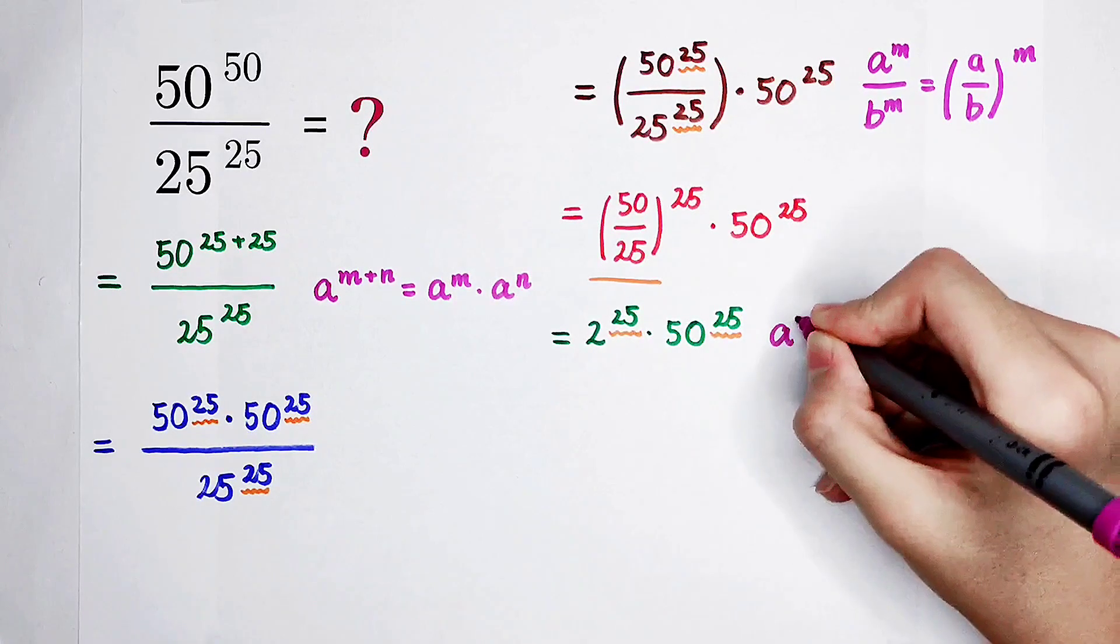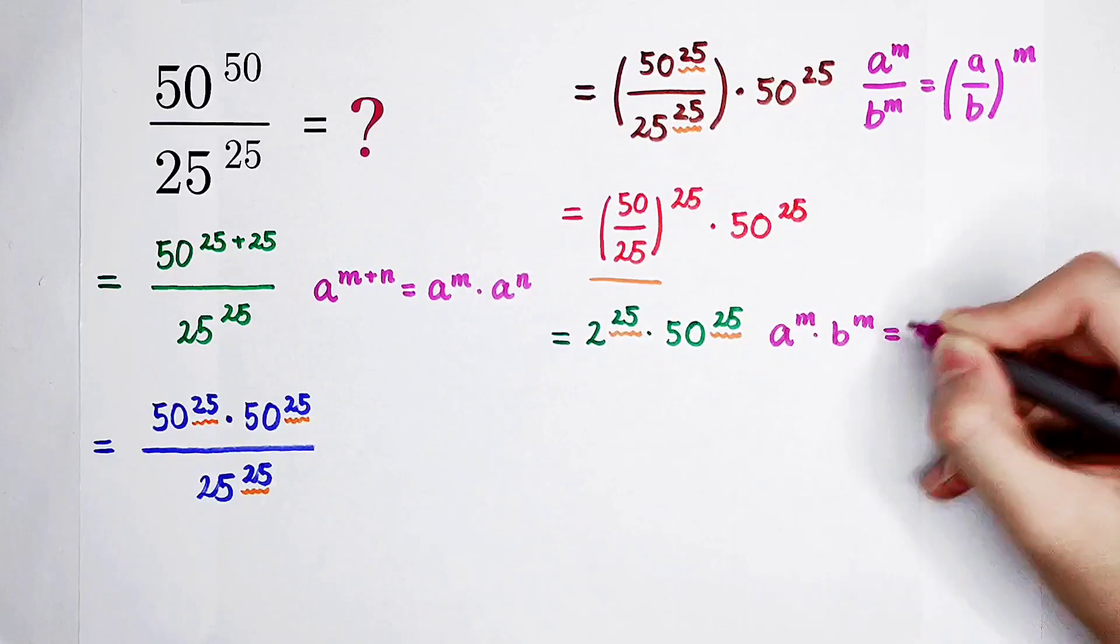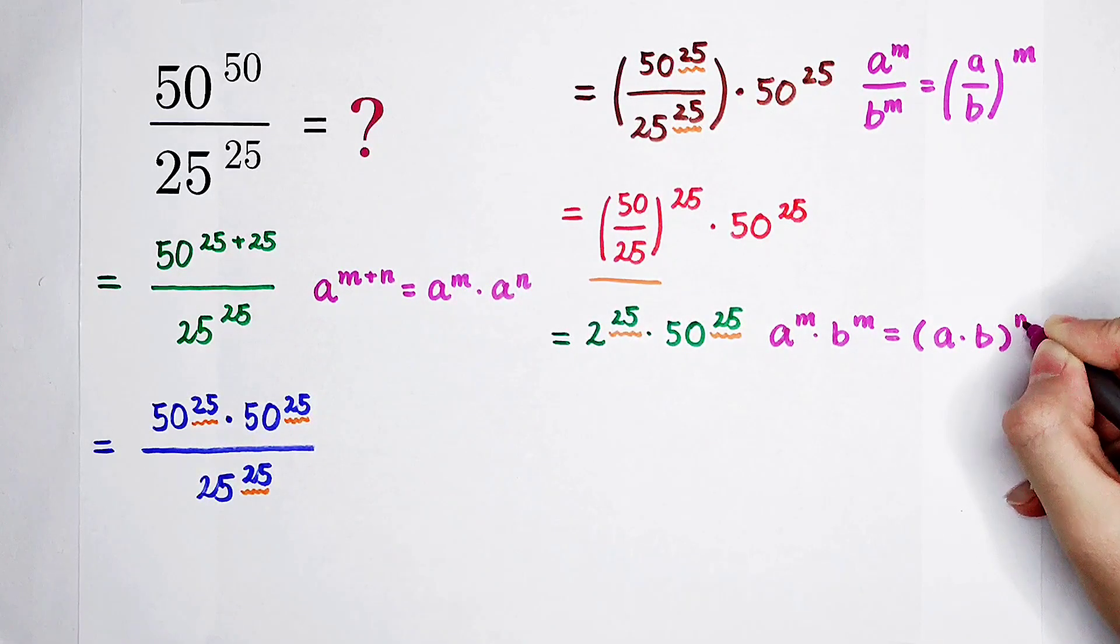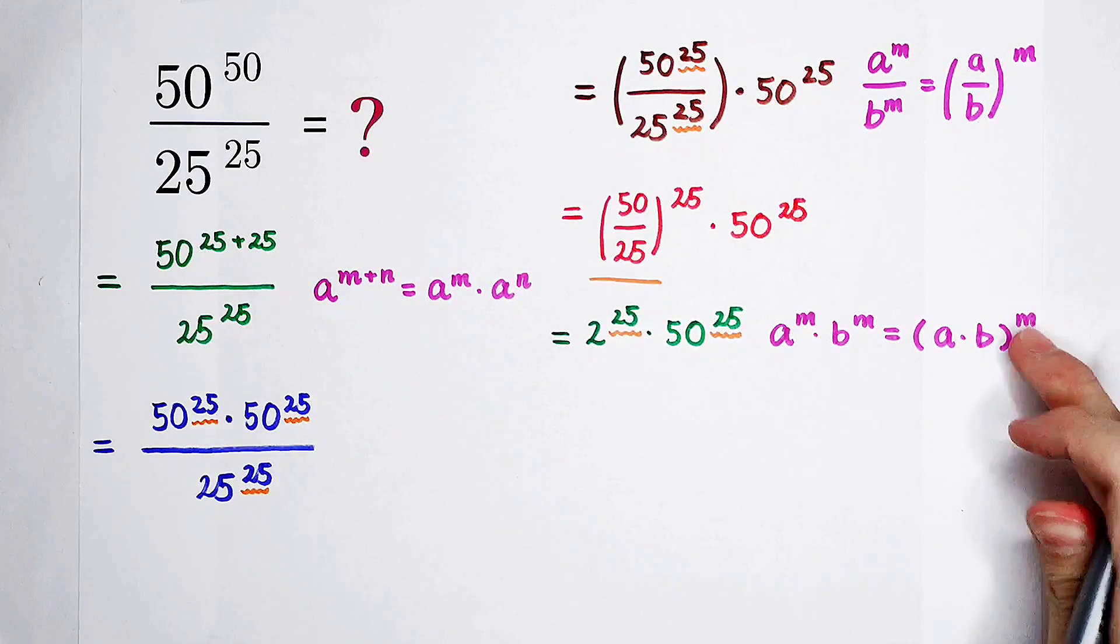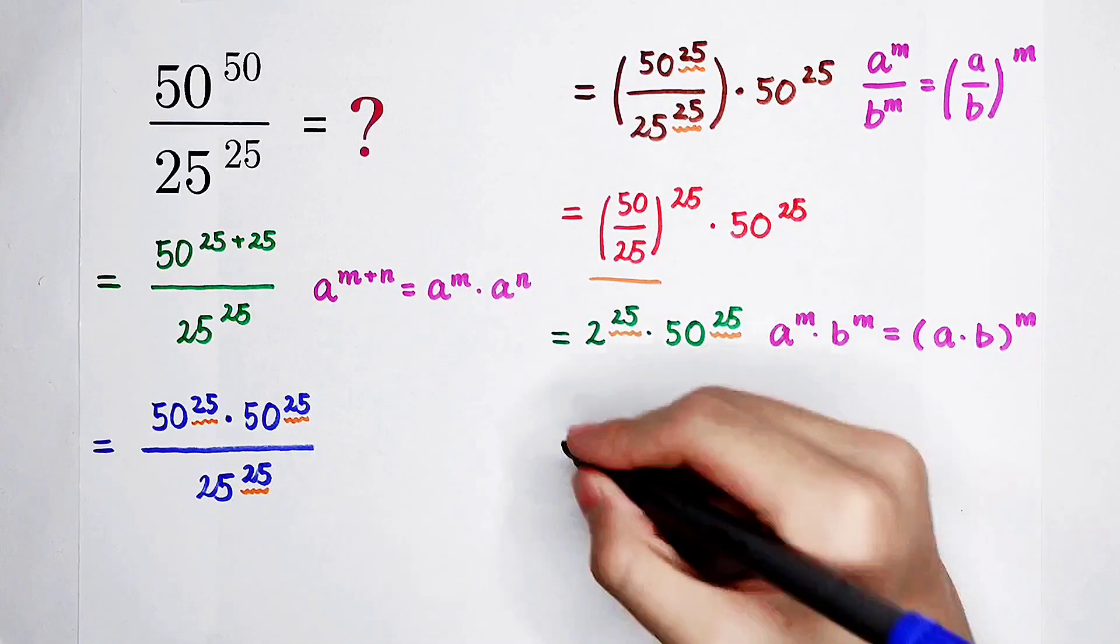That is, a to the power of m times b to the power of m is equal to a times b is the base, and they have m as the exponent. So this formula could help us with our next step. Go on.